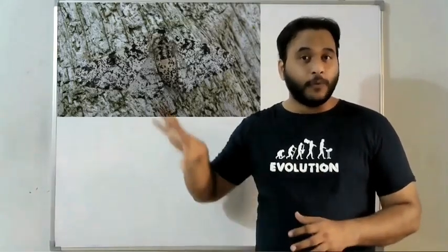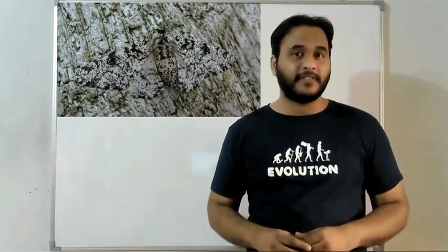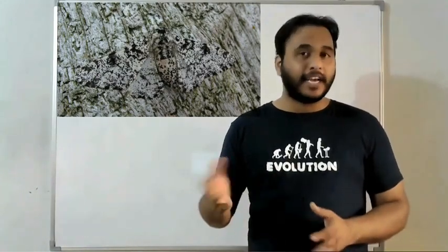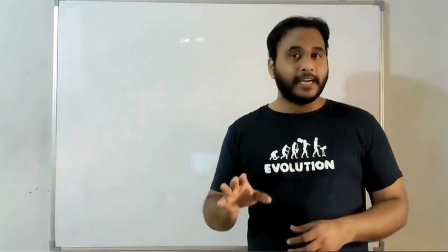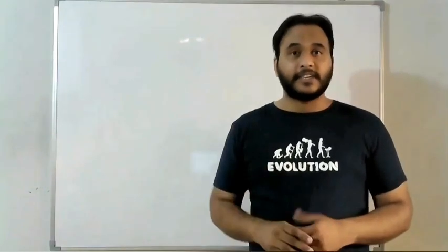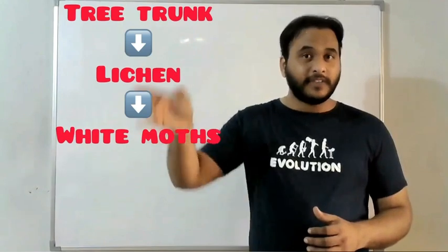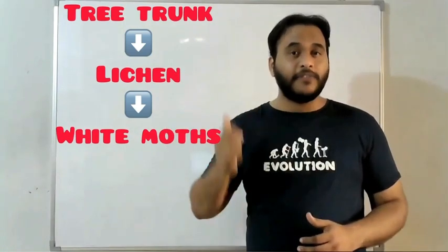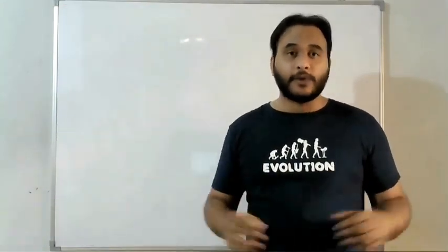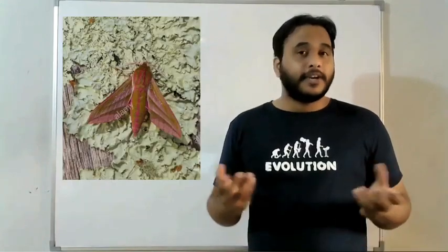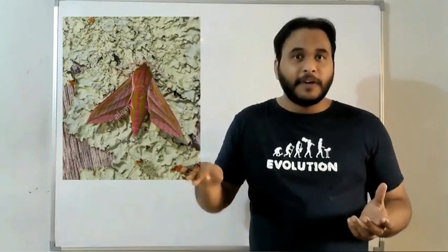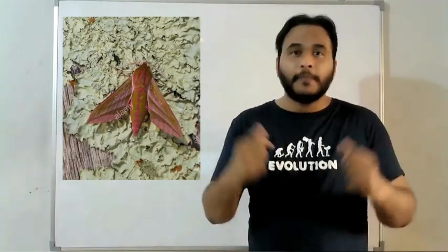Because these white-winged moths were surviving against the white background of lichens. We know what are lichens—algae and fungal association, white color lichens on the tree trunk. Against the white color lichens, these white-winged moths were safely surviving, whereas the dark-winged moths against the white background will be clearly visible by their predators and can be caught easily.